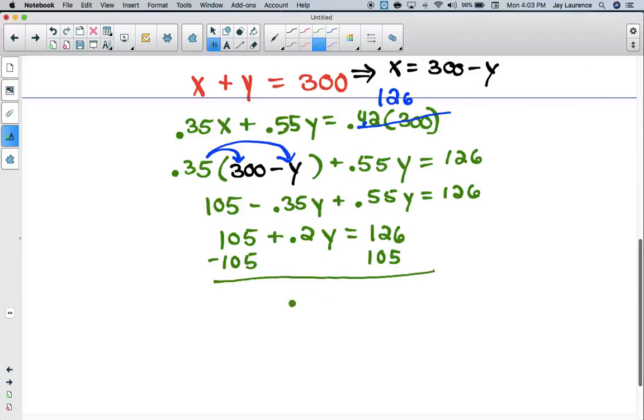And I'm going to get 0.2Y equals 21. I think if I divide by 0.2, I'm going to get 105. Let me just double check. Yep, 105.